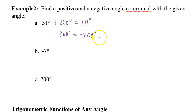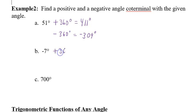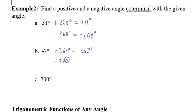Example B: negative 7 degrees. Adding 360 gives 353 degrees — a positive coterminal angle. Subtracting 360 gives negative 367 degrees — a negative coterminal angle with negative 7.